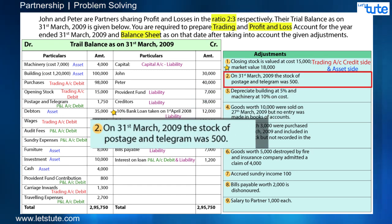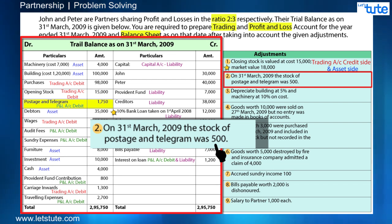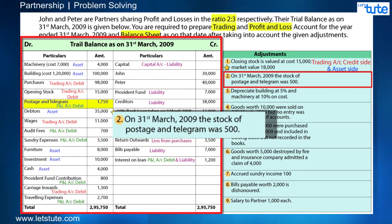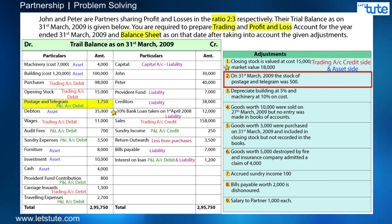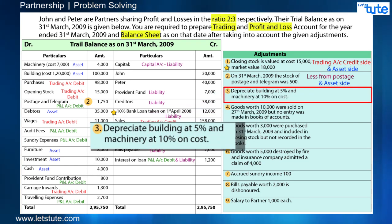Second adjustment: on 31st March 2009, the stock of postage and telegram was 500. In the trial balance, the expense of postage and telegram is 1,750, but out of this, 500 remains as stock — it is not utilized in the current year and hence is not an expense for this period. So first, deduct 500 from postage and telegram on the P&L debit side. Since this stock is an asset, the second effect will be on the balance sheet asset side. Third adjustment: depreciate building at 5% and machinery at 10% — effects are reduce from asset and P&L debit.